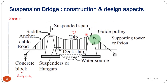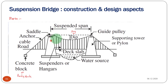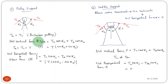At the tower support we can have two types: either a pulley or a saddle type. For the pulley support, rollers are provided so that movement is allowed, meaning there won't be any horizontal force at the top of your tower.